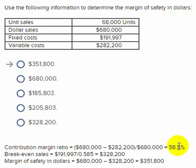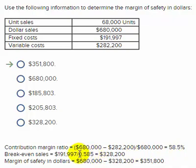Now we're going to take that 58.5% and divide it into the fixed cost. The fixed costs are $191,997, and we'll express 58.5% as 0.585. When we make this calculation, break-even in sales dollars comes out to $328,000.